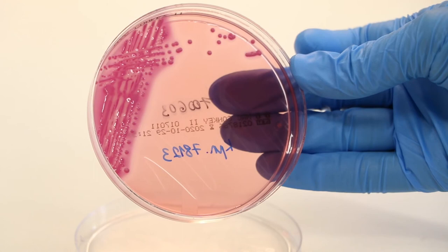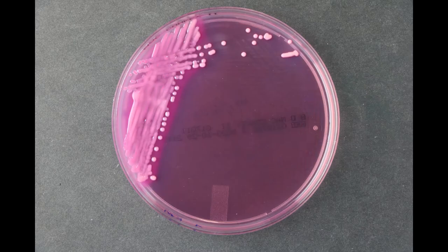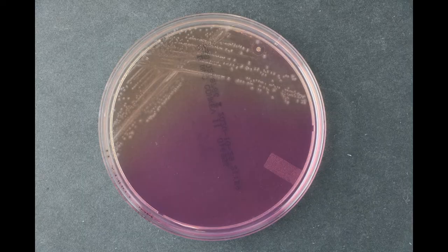On the selective McConkey medium, only gram-negative bacteria will grow, and the color of the colonies allows a categorization in lactose-fermenting or non-fermenting bacteria.